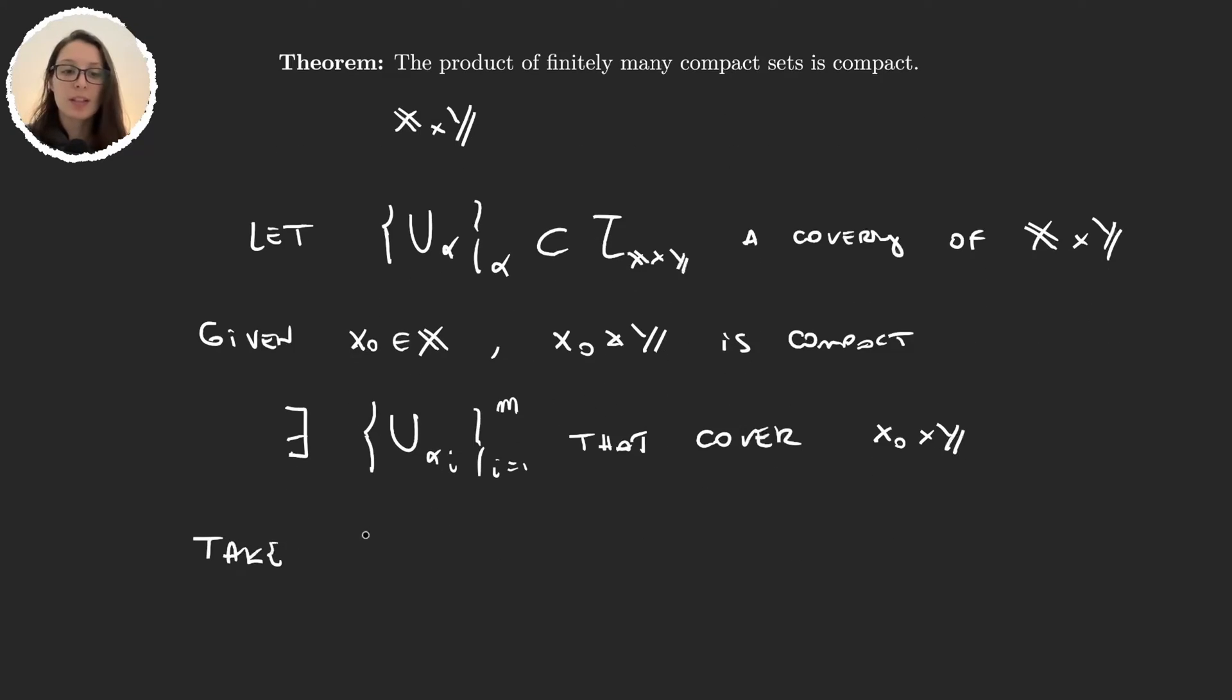Well now let's take N to be the union of all these finite sets. Obviously N is an open set in the product topology, and contains x₀ times Y.